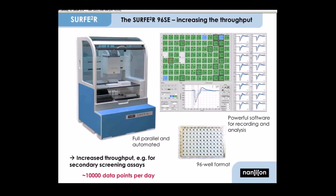And then we have the Surfer 96 SE, which we introduced last year. This is our high throughput device. It performs 96 measurements in a full parallel mode. For this, a sensor plate in 96 well format is used. It includes a 96 channel amplifier and 96 well pipetting system.